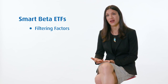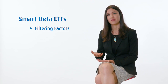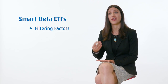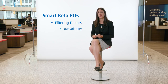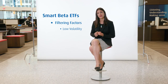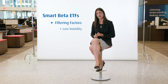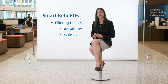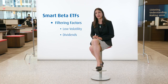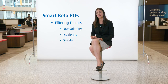Within a smart beta ETF, an index is typically filtered based on a factor. For example, low volatility is a factor, and dividends are another particular factor. Another type of smart beta ETF that we offer is the MSCI quality strategy.